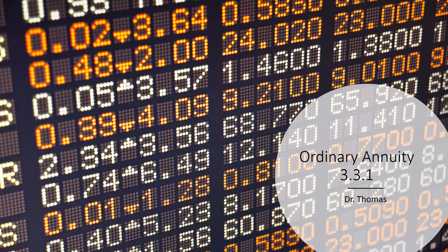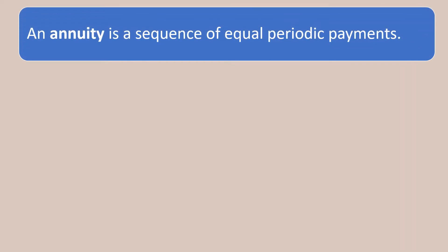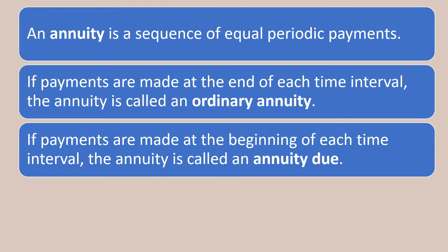This video is all about mathematical finance, and in this we are going to learn about the ordinary annuity. We will also see the future value of an ordinary annuity in this section. An annuity is a sequence of equal periodic payments. If the payments are made at the end of each time interval, then the annuity is called an ordinary annuity. Instead of at the end, if it is made at the beginning of each time interval, it is called an annuity due.